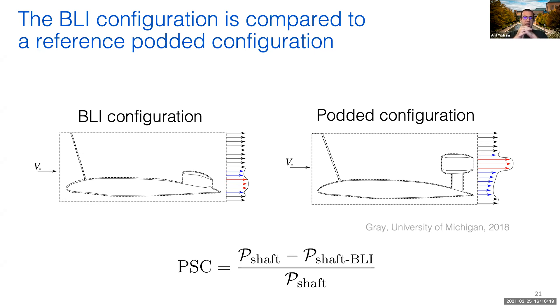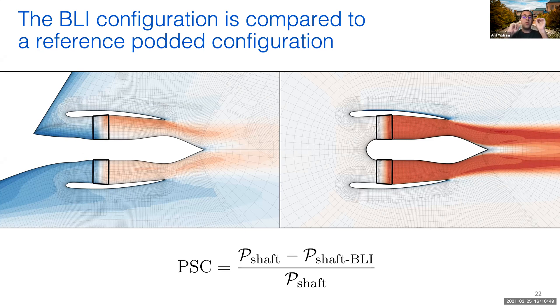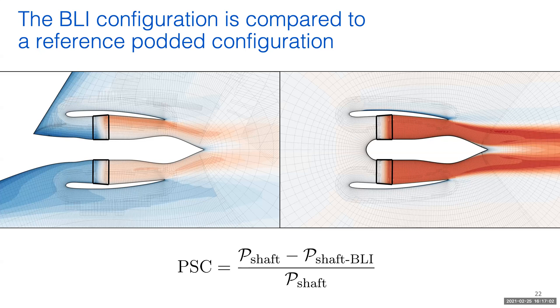To estimate the benefit of BLI, we compare a BLI configuration to a reference podded configuration. Using the power requirements from these two configurations, we can define a metric called Power Saving Coefficient, or PSC, which is similar to a relative efficiency gain from BLI. For the STARC-ABL concept, we also looked at a BLI and a reference podded configuration. The BLI configuration uses the propulsor near the aft fuselage and ingests the fuselage boundary layer, while the reference podded case ingests free-stream air. In the figures here, you can see the symmetry plane of the three-dimensional CFD domain we use in these optimizations. The black rectangles represent the areas where we model the effect of a fan using body force terms.